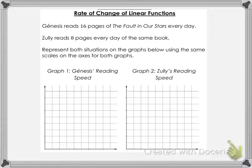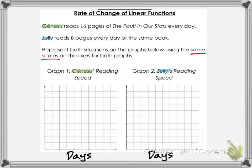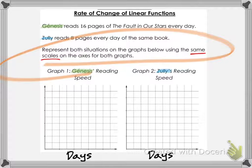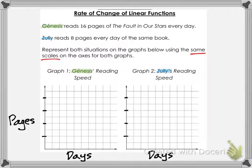Let's get into a practice problem so you can understand what rate of change is. Genesis reads 16 pages of The Fault in Our Stars every day. Zooli reads 8 pages every day of the same book. We're asked to represent both situations on graphs below using the same scales. Let's have Genesis be the left graph in green and Zooli be the right graph in blue. When it says the same scales, that means days is our x-axis, pages read is our y-axis, and you need to count by the same pattern of numbers on both axes.